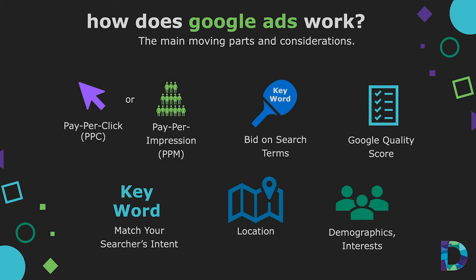Google Ads display to potential leads or customers who are interested in your product or service, and they allow advertisers to pay per click or pay per impression. As an advertiser, you bid on search terms or keywords, and the winners of those bids are placed at the top of search results pages, on YouTube videos, or on relevant websites, depending on the type of ad campaign selected.